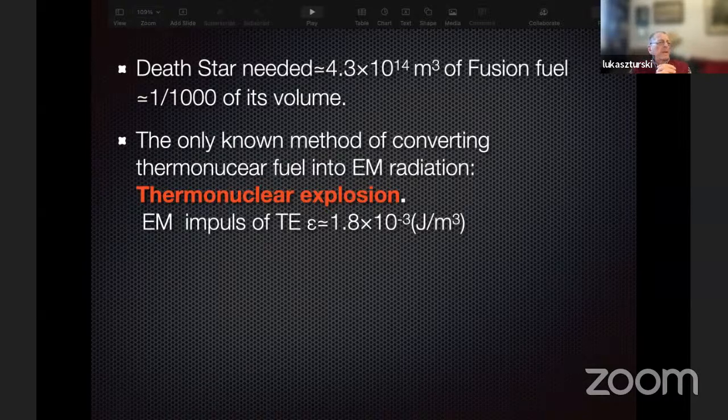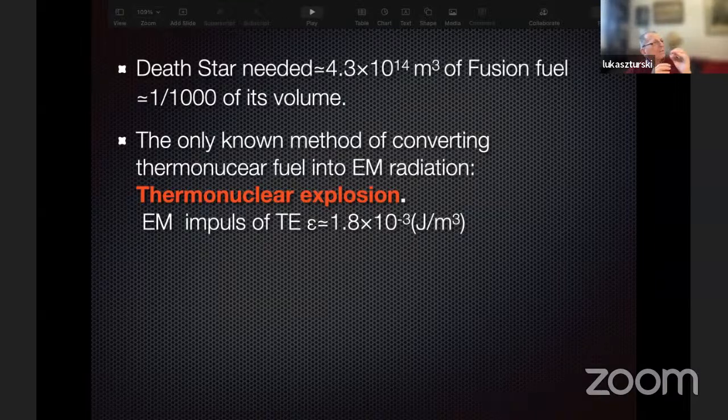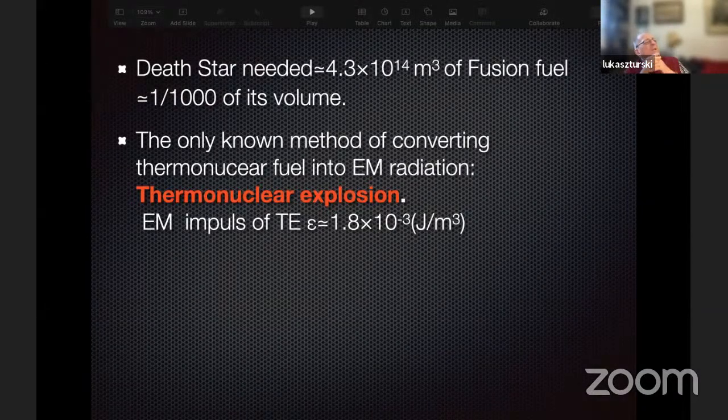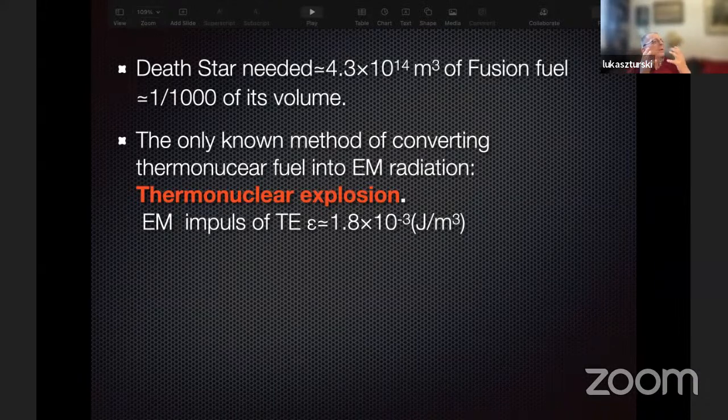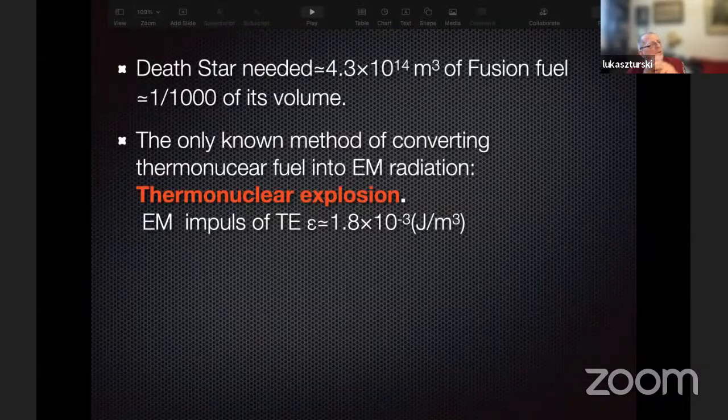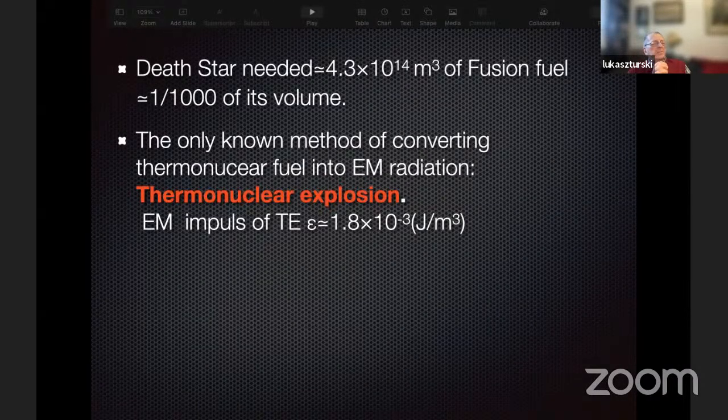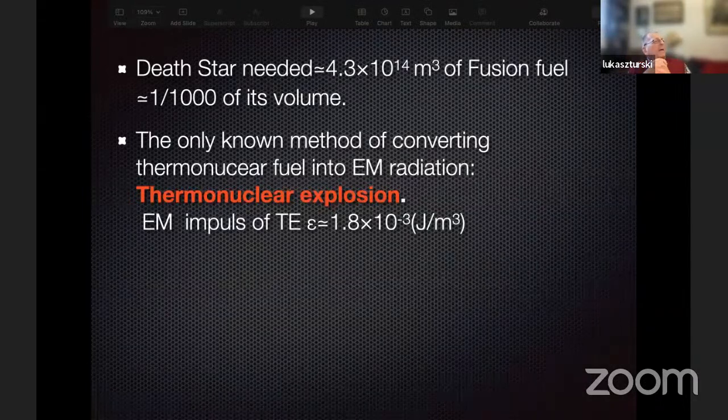If we calculate how much of the volume of the Death Star must be used to store that amount of energy which is necessary for destroying Alderaan, then it turns out it's about 1/1000 of its volume. So that's okay. If this is nuclear material, then it's about 1/1000 of the volume of the Death Star. It's a huge part of the construction, but it is feasible from the engineering point of view.